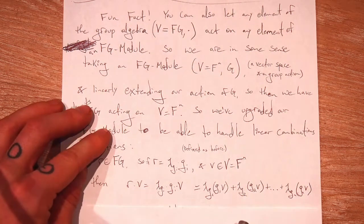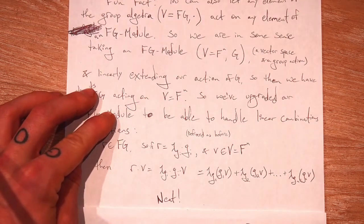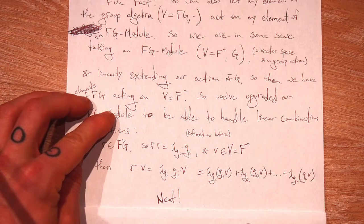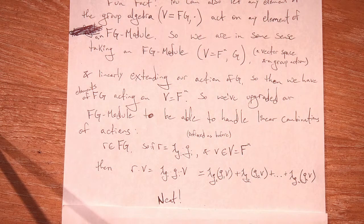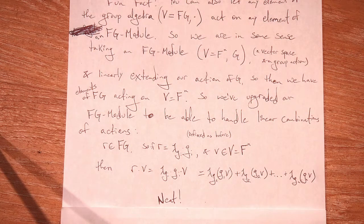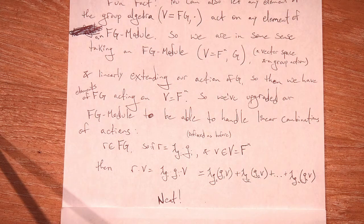So we have now upgraded our abilities with FG modules to let linear combinations of group actions act on our vectors, and I think that's kind of neat. Thanks for watching, guys. The next video is going to be a bunch of examples just to make this stuff clear. It's actually really straightforward once you do a couple of examples, and I'm sure the examples are going to clear things right up. Thanks for watching and see you in the next video.